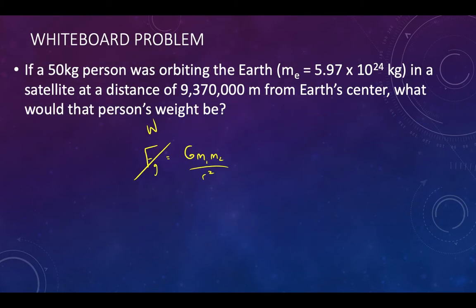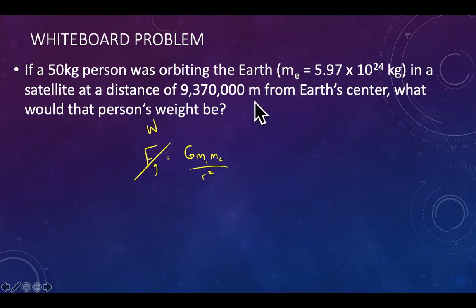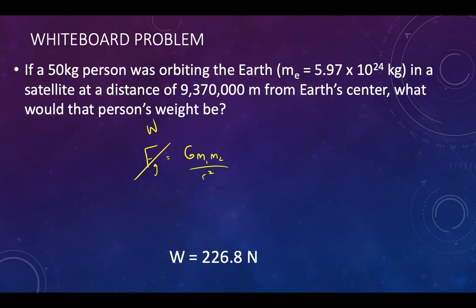Stop and work this problem: a 50 kg person orbiting the Earth in a satellite at a distance of 9,370,000 meters from Earth's center — what would that person's weight be? Note that the problem gives distance from Earth's center, which includes both the height above the surface and the Earth's radius. If you were given height above Earth, you'd need to add the Earth's radius. Stop, work it out, then come back. The answer is about 226.8 Newtons.